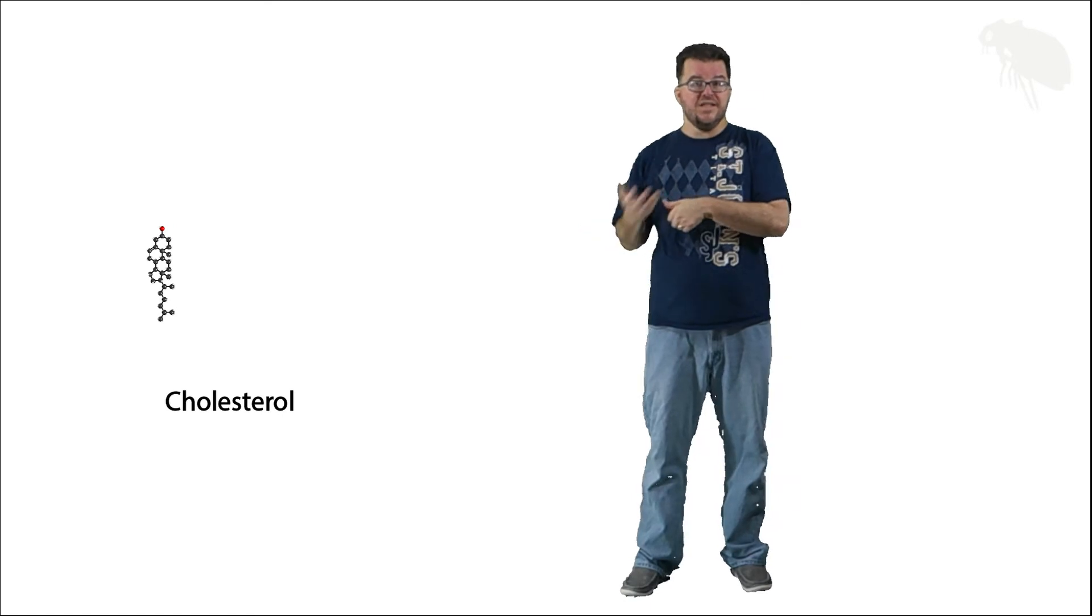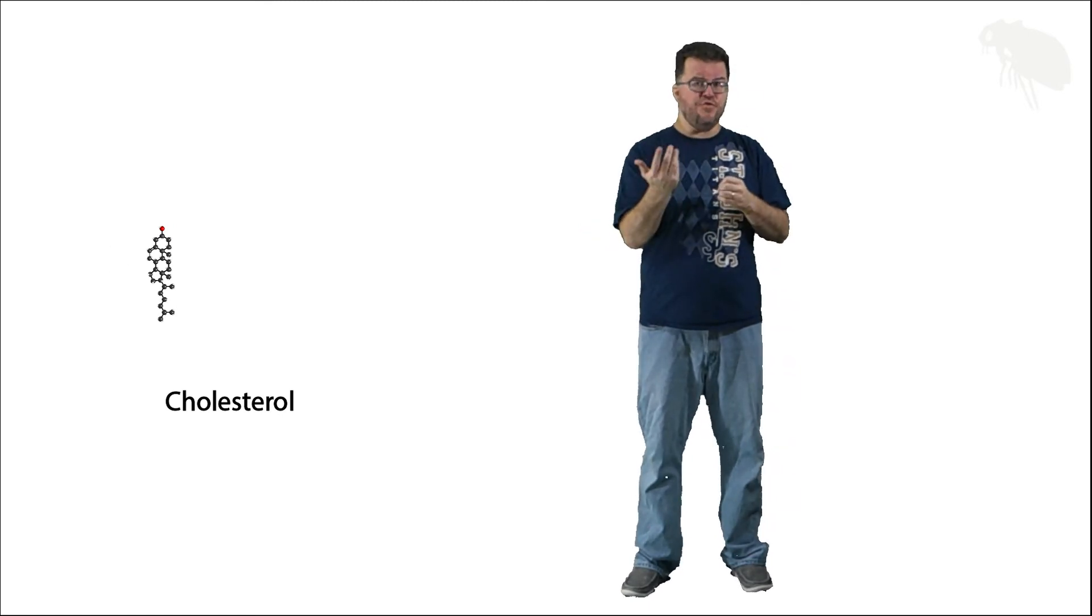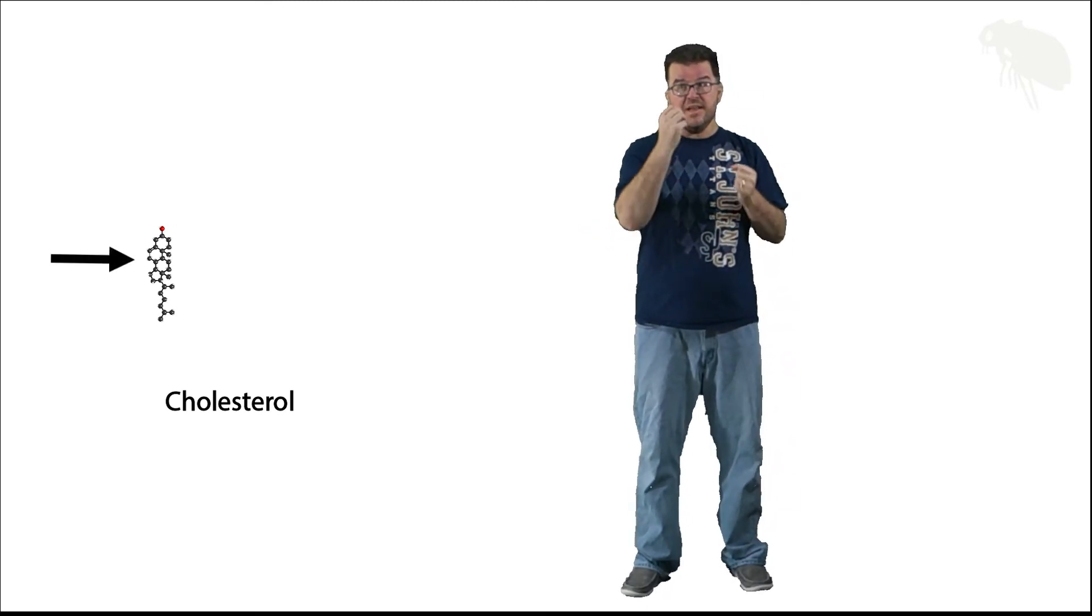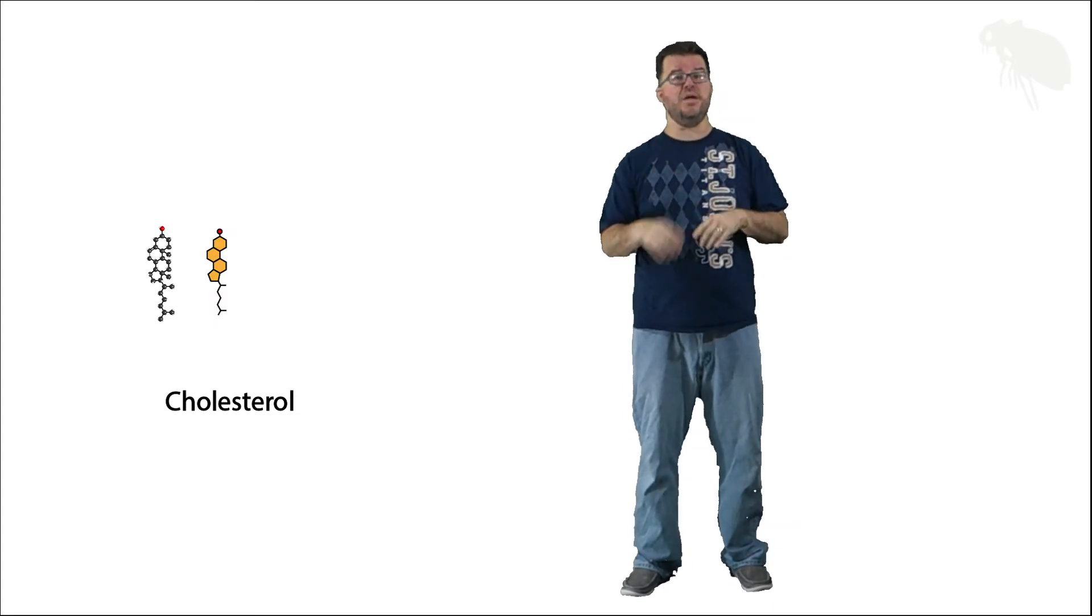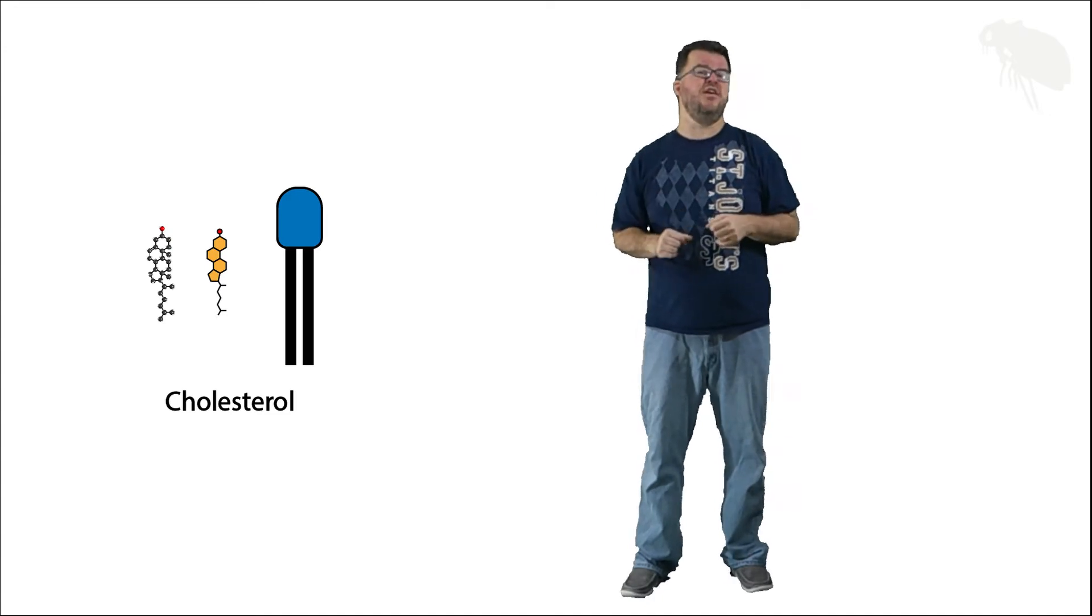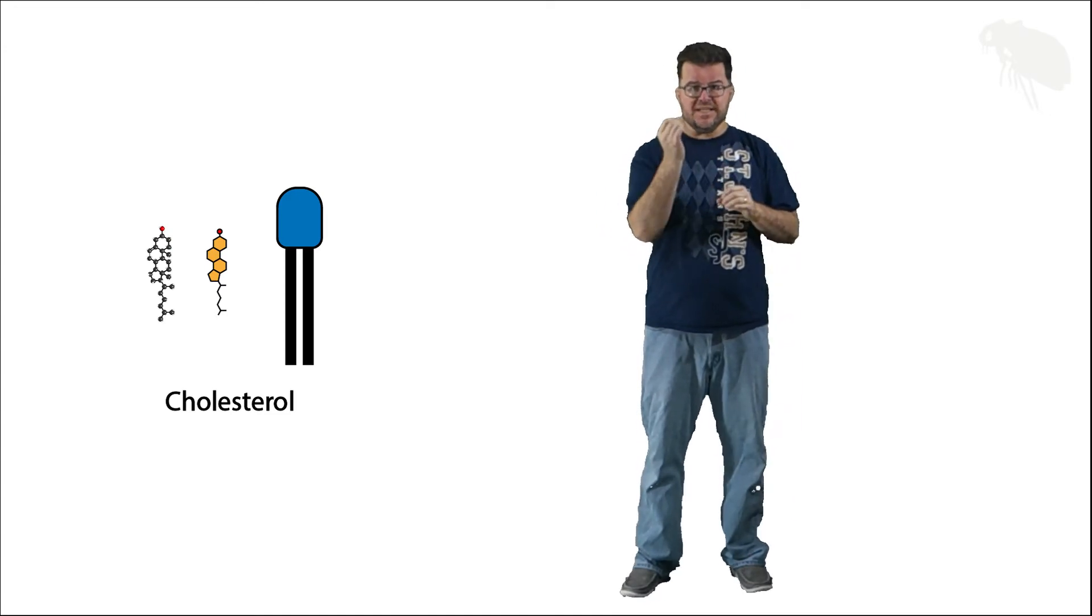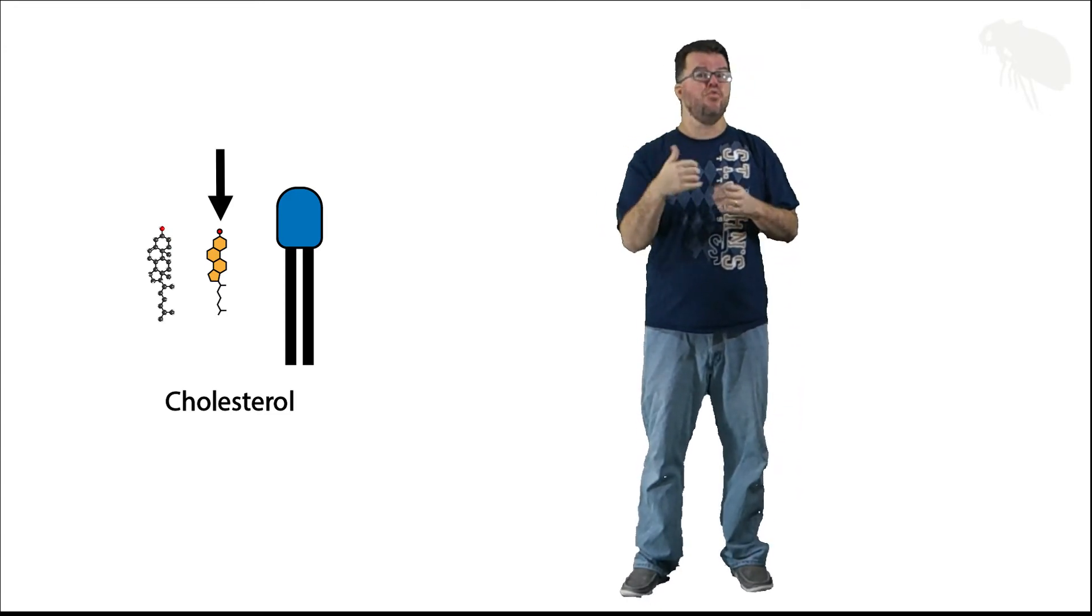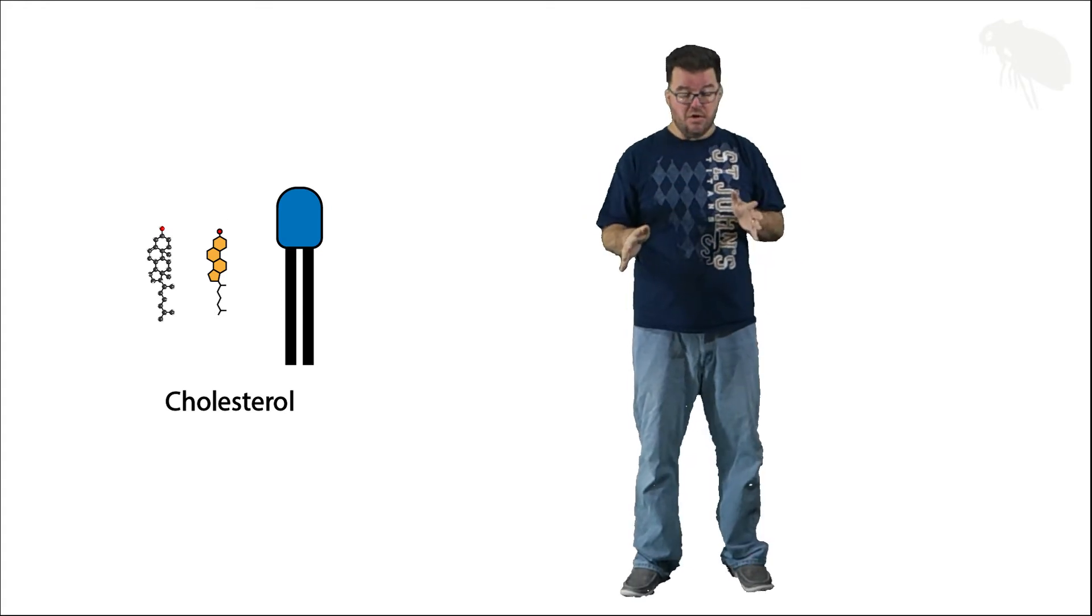Here we have cholesterol. It's a steroid. You can see the four ring structure, classic steroid. Let's again make it a cartoon and then compare it to a phospholipid. It's a good size molecule, but it's smaller than a phospholipid. And the key here is it's got a single hydroxyl group, that red ball, and then the rest of it's all carbon and hydrogen.